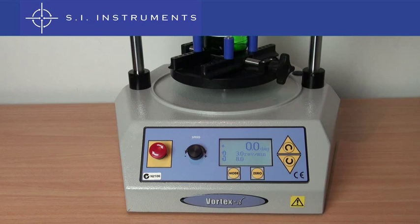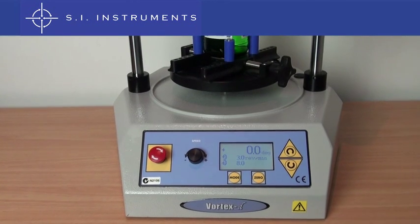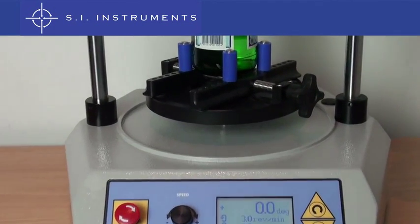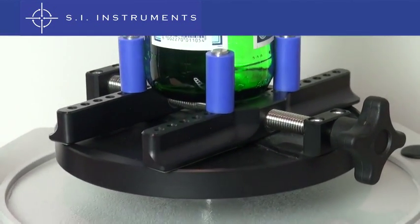The McMesson Vortex consists of a base with electric motor to rotate the bottle at a pre-set constant speed.